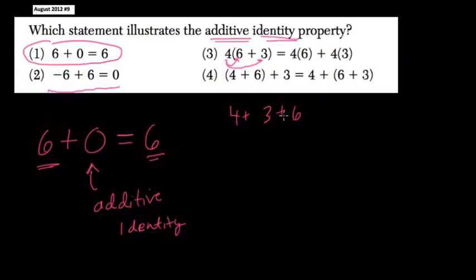The associative property, which is what number 4 is, is the changing of the grouping of the numbers or the way you group with parentheses.